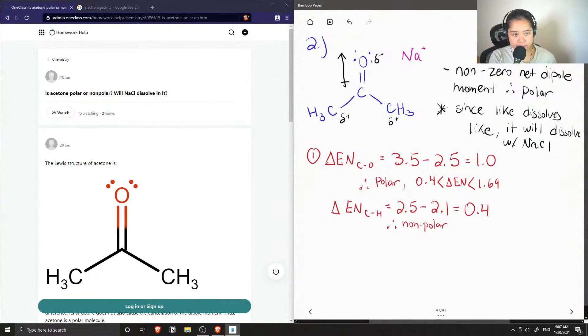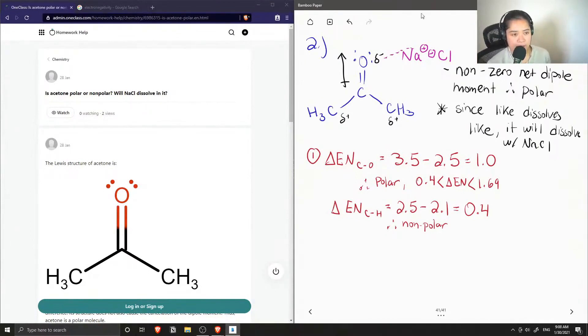But this positive sodium ion can be attracted to the partially negative oxygen on our acetone, and this is how they can dissolve together.